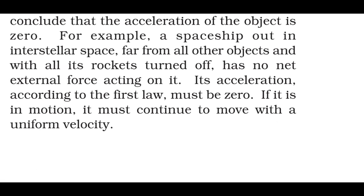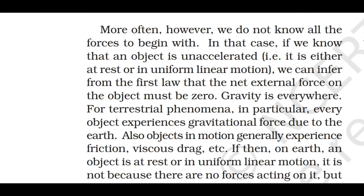Two kinds of situations are encountered in the application of this law in practice. In some examples, we know that the net external force on the object is zero. In that case, we can conclude that the acceleration of the object is zero. For example, a spaceship out in interstellar space, far from all other objects and with all its rockets turned off, has no net external force acting on it. Its acceleration according to the first law must be zero. If it is in motion, it must continue to move with a uniform velocity. More often, however, we do not know all the forces to begin with. In that case, if we know that an object is unaccelerated — that is, it is either at rest or in uniform linear motion — we can infer from the first law that the net external force on the object must be zero.